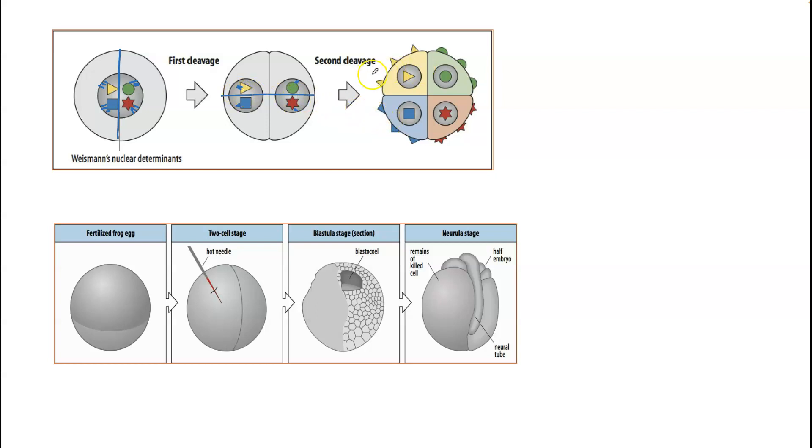Then you would have this embryo, and one cell would be specified to form maybe the anterior ventral structures, and this one would be specified to form the anterior dorsal, posterior dorsal, and posterior ventral. As they divided more and more, you'd have a subset of these that was going to form, say, the germ line and a subset that was going to form muscles and nerve cells and all that sort of thing.